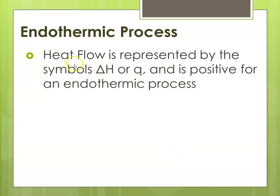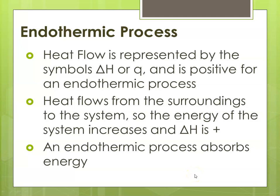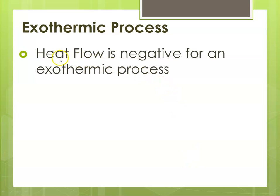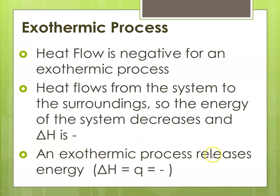For an endothermic process, heat flow is represented by delta H or Q as a positive value. Heat flows from the surroundings to the system, so the system increases in energy — therefore delta H is positive. An endothermic process absorbs energy from the surroundings. For an exothermic process, heat flows out of the system, so heat flow is negative. Energy flows from the system to the surroundings, so delta H is negative. An exothermic process releases energy — delta H or Q is negative.